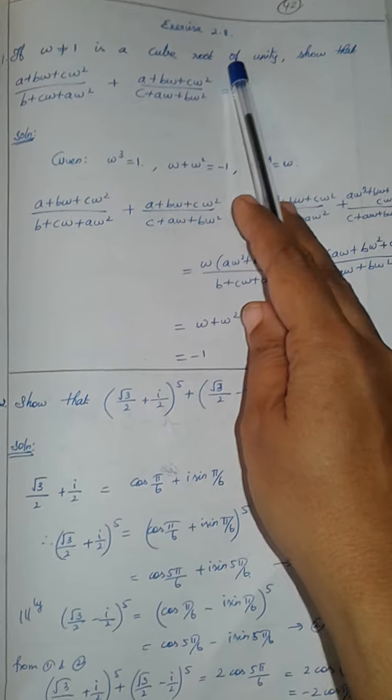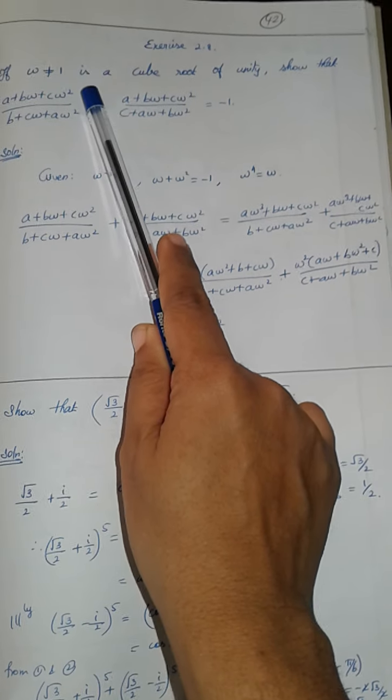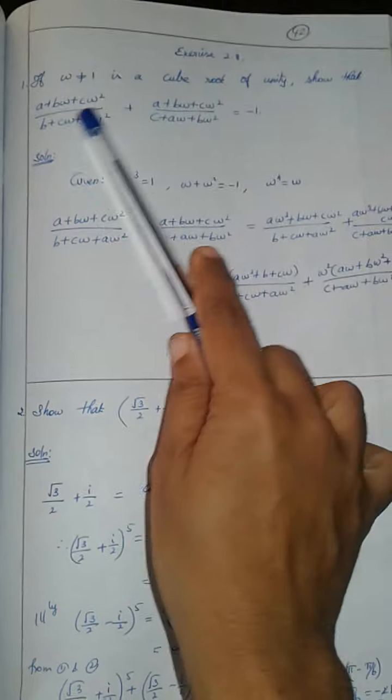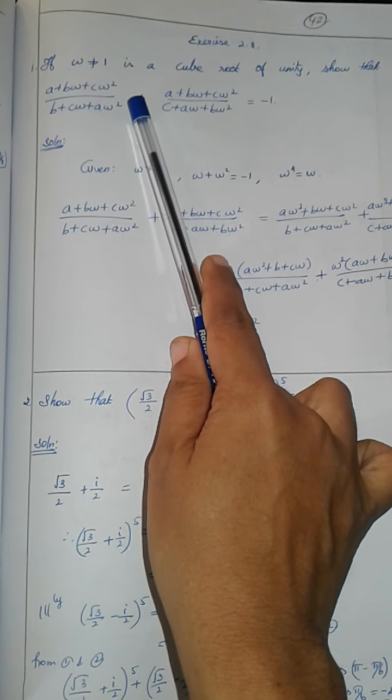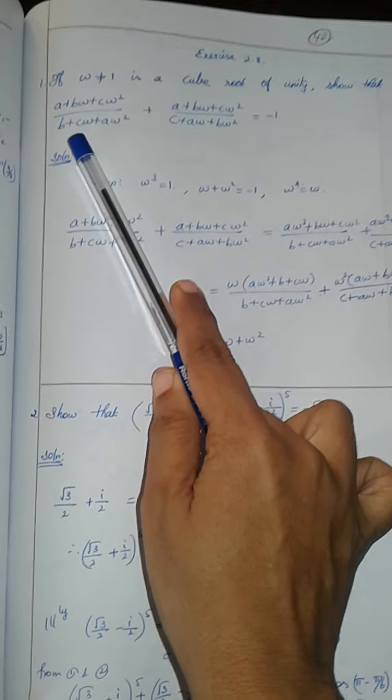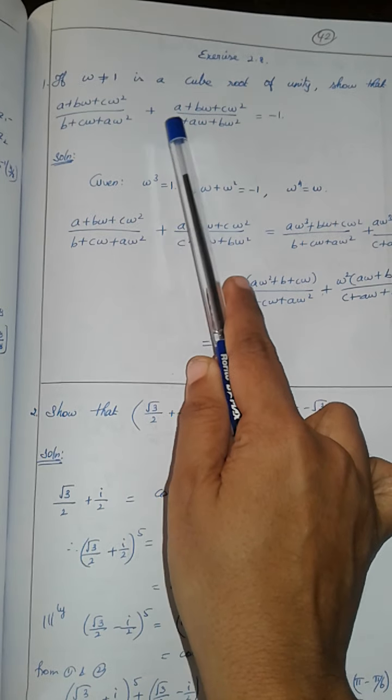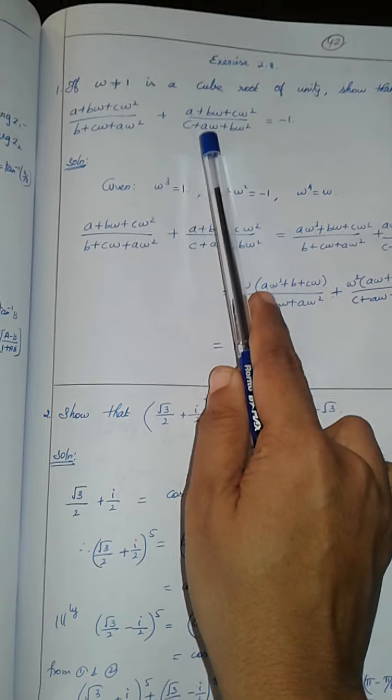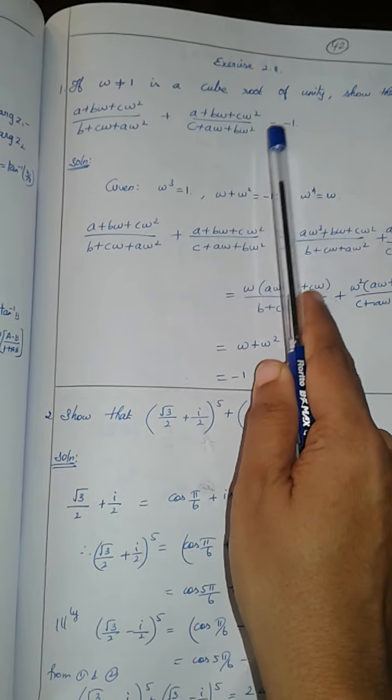Next, exercise 2.8, problem number 1. If omega not equal to 1 is a cube root of unity, show that (a + b omega + c omega squared) / (b + c omega + a omega squared) + (a + b omega + c omega squared) / (c + a omega + b omega squared) equals minus 1.